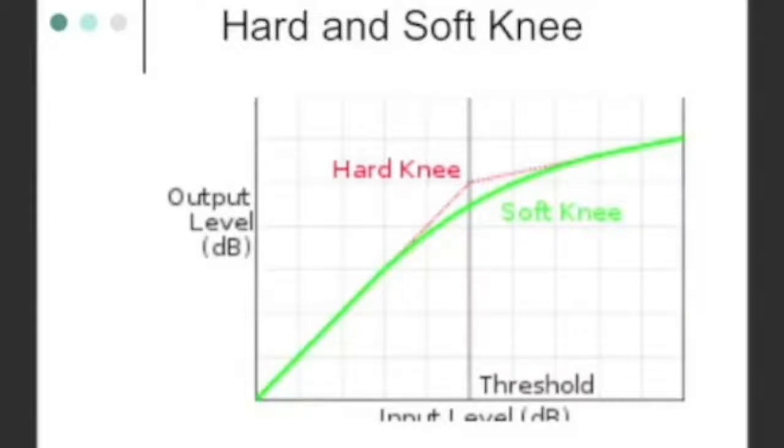But things that have a lot of dynamic, like a vocalist, you want to be more gentle with. That's the difference between a hard and a soft knee. And generally speaking, the vintage compressors, the ones that are really pricey, are soft knee compressors.